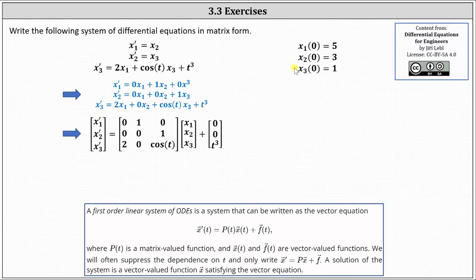Now let's move along to the initial conditions. We have x1 of 0 equals 5, x2 of 0 equals 3, and x3 of 0 equals 1. We can easily write this in matrix form, as shown here below.